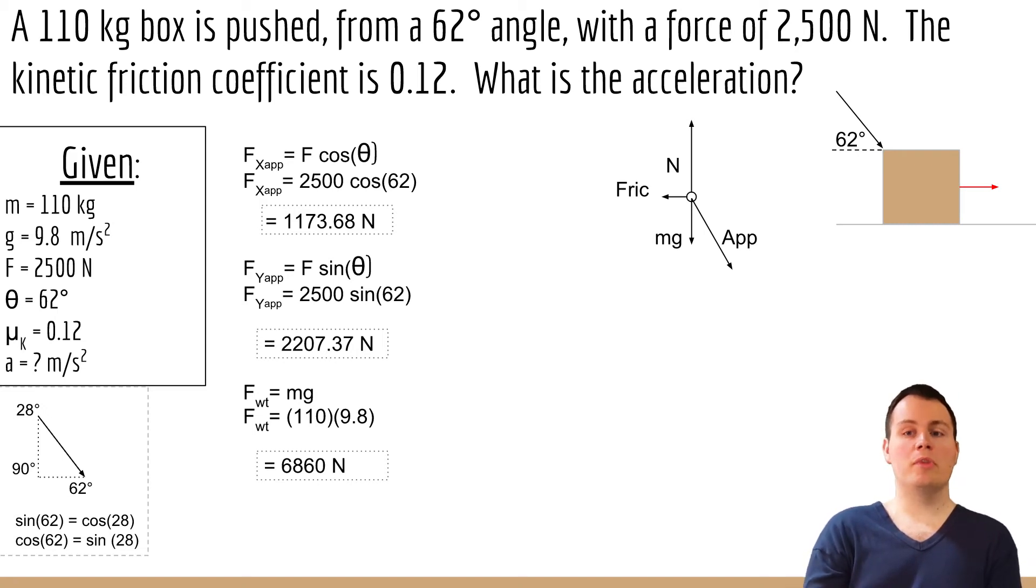And since we know that the block is not accelerating in the up and down direction, the sum of the forces in that direction should be equal to zero. That means that the normal force has to equal the sum of the y component of the applied force plus the force of gravity. And we're going to need that for finding the force of friction.